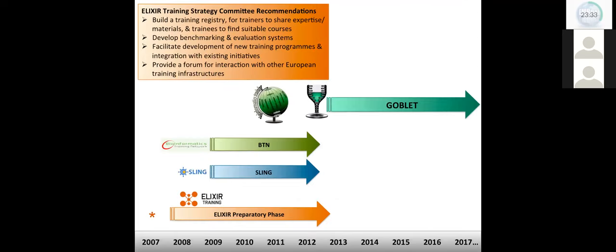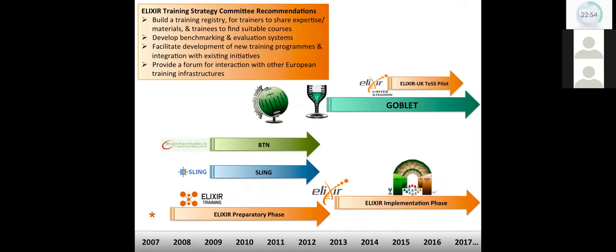So GOBLET then officially came into being in November 2012, a few months before ELIXIR's implementation phase, which started in early 2013. One of ELIXIR's immediate tasks was to attract new nodes, amongst which was ELIXIR UK. Some of you may remember that for political reasons, ELIXIR UK was initially mandated to be a training node. So its first project was to create a platform to coordinate training information across the ELIXIR landscape. This was the training e-support system TESS.